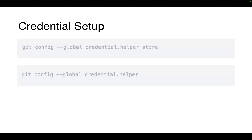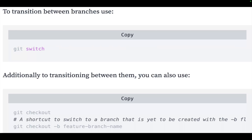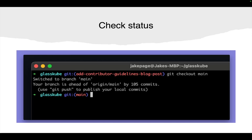`git branch` shows which branch you are currently working on. To create a new branch, use `git branch` followed by the branch name — this creates a new branch from the current branch you are on. To transition between branches, use `git switch` or `git checkout` followed by the branch name. You can also use `git checkout -b` followed by a branch name: the `-b` flag creates the branch if it doesn't already exist.